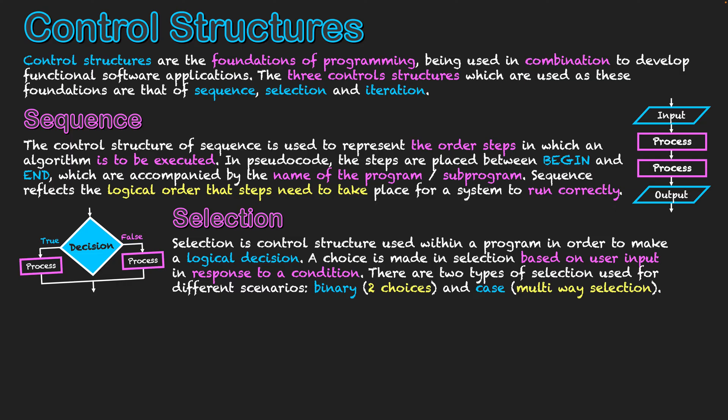There are two types of selection used in scenarios. There's that of binary selection where there are two choices, and that's basically whether the condition has been met. And if it's not met, it will go down another path. And then case selection, which is a multi-way selection, which essentially relates to multiple pathways based on different criteria being satisfied.